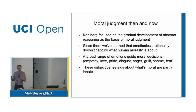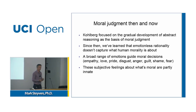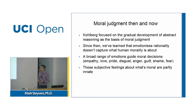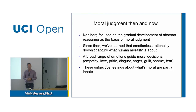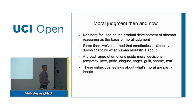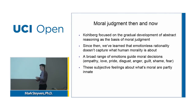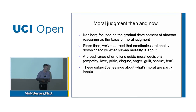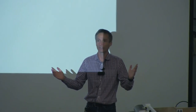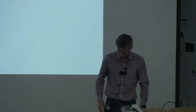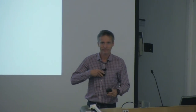To finish up: we talked about Kohlberg and the gradual development of abstract reasoning. We learned that emotion plays a big role — there's no such thing as emotionless rationality. There's a broad range of emotions that can guide moral decisions: empathy, love, disgust, anger, guilt, shame, fear. It's not quite clear what's cause and effect — are these feelings causing your explanations, or are explanations causing your feelings? We need to do more research. This is the end of the class. I've enjoyed teaching this class to you — thanks for your attention. I'll see you at the exam.